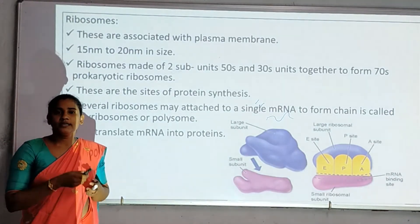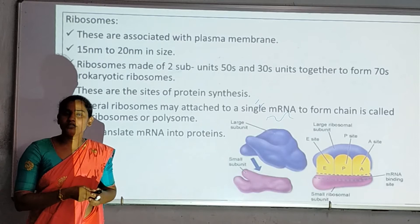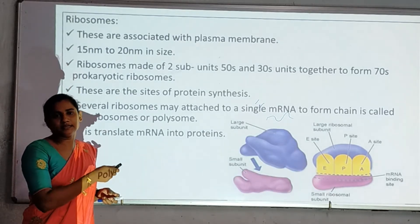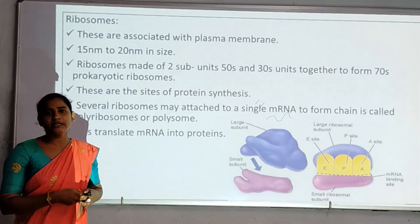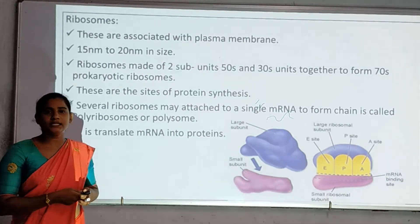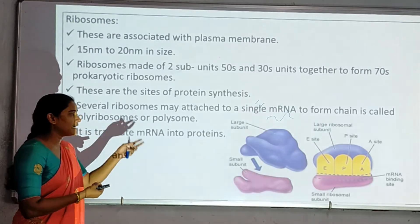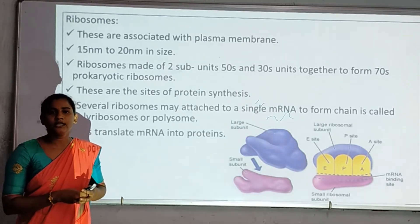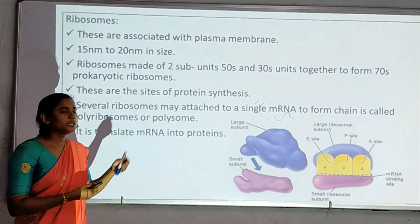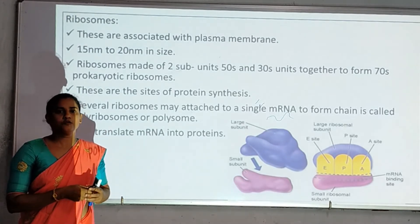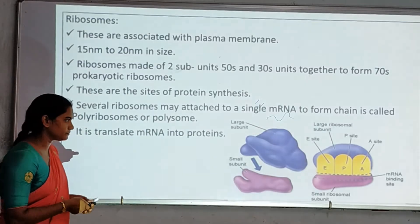The main site of the ribosome is protein synthesis. Multiple ribosomes attached to a single messenger RNA strand form a polyribosome, also called a polysome. The messenger RNA information is used to convert and synthesize proteins. This structure is called the polyribosome.